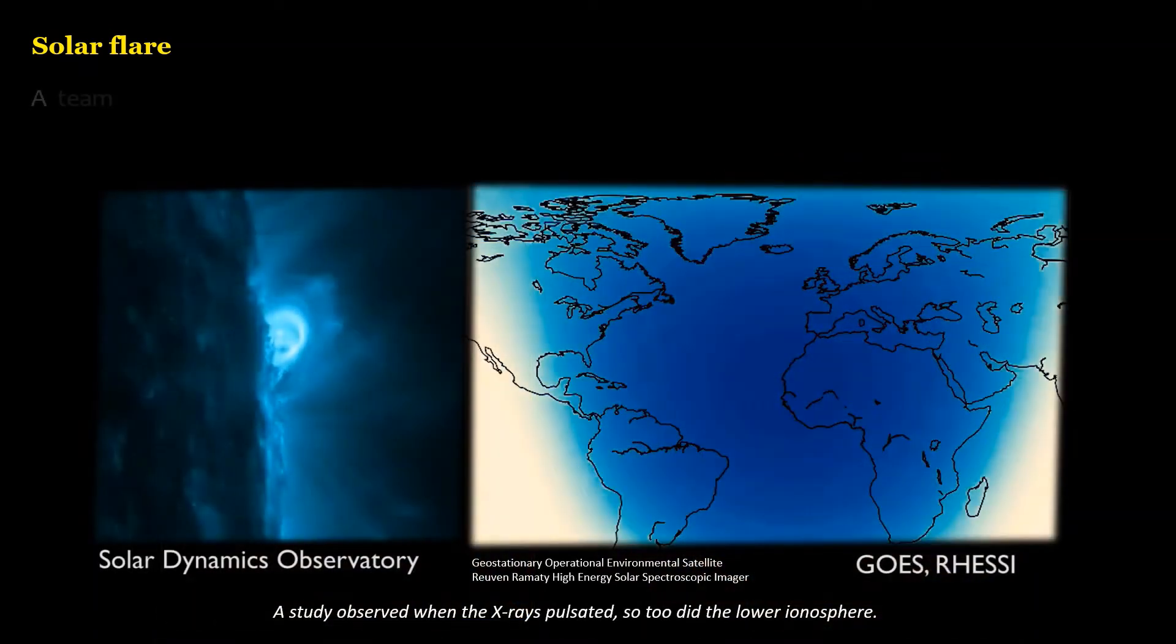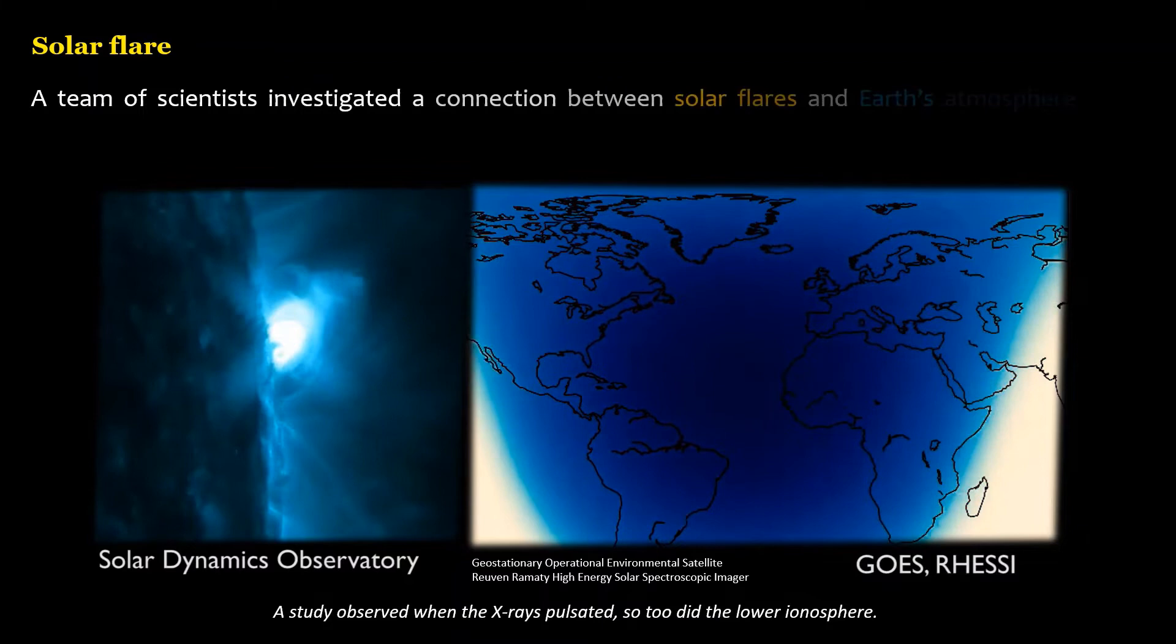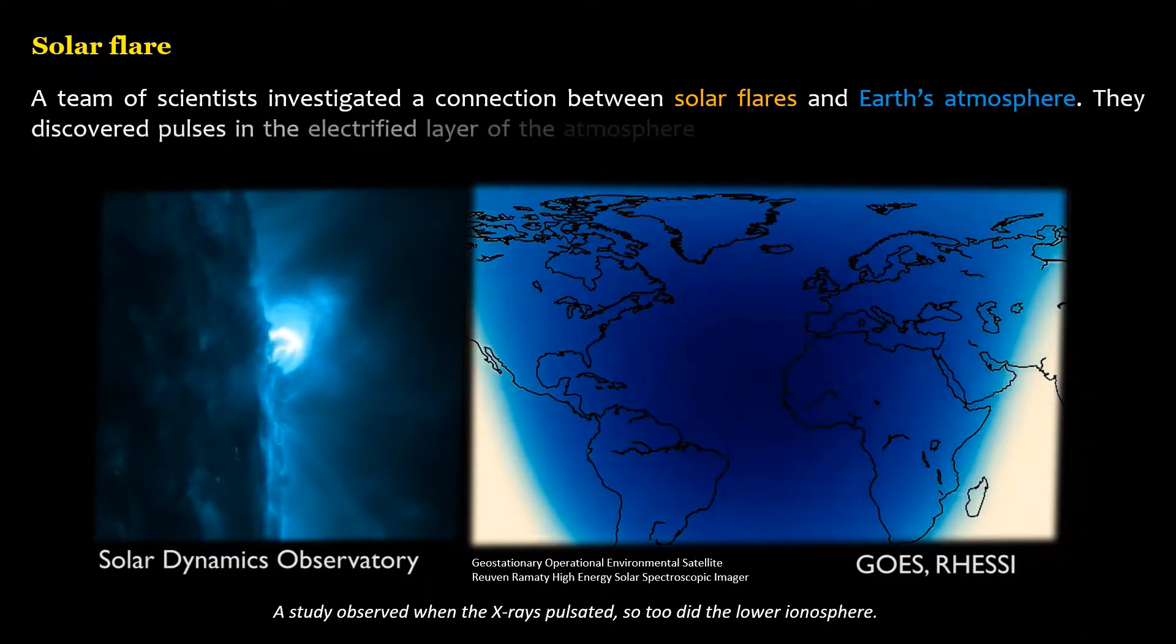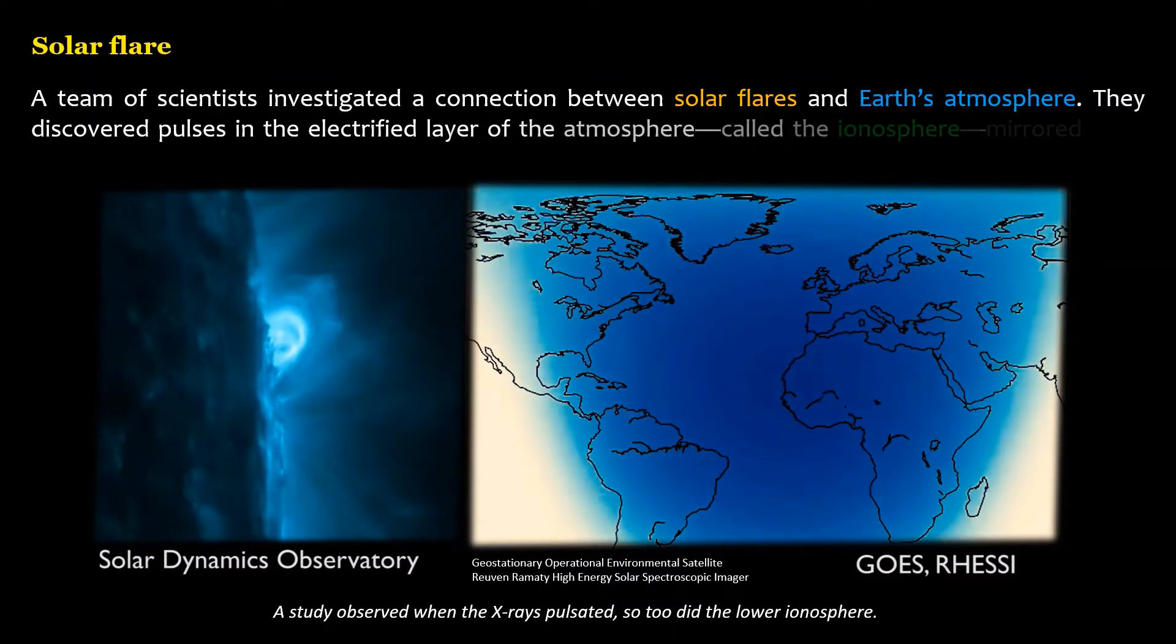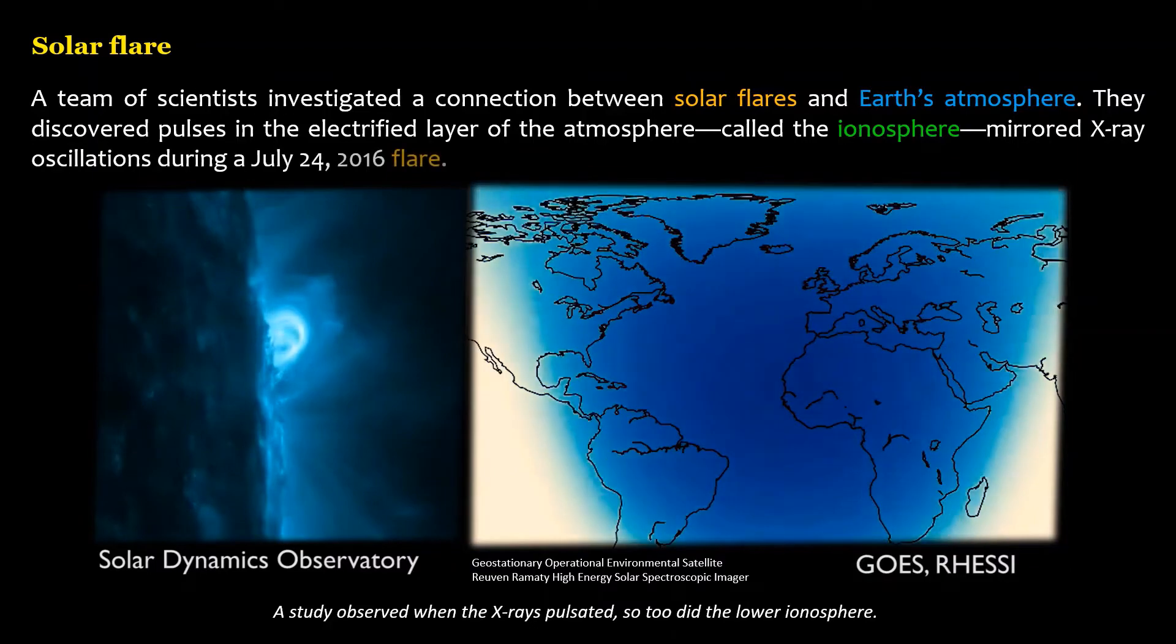A team of scientists investigated a connection between solar flares and Earth's atmosphere. They discovered pulses in the electrified layer of the atmosphere, called the ionosphere, mirrored X-ray oscillations during a July 24, 2016 flare.